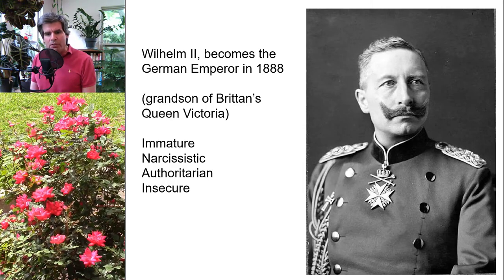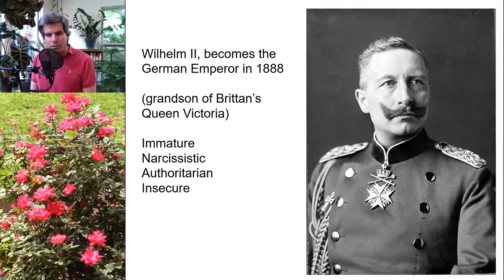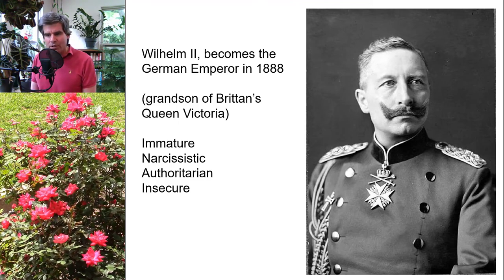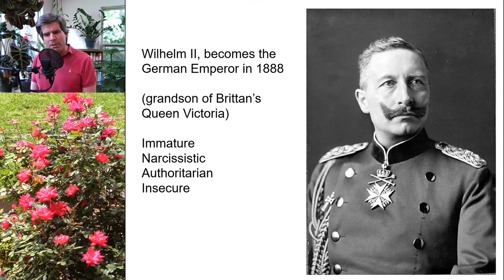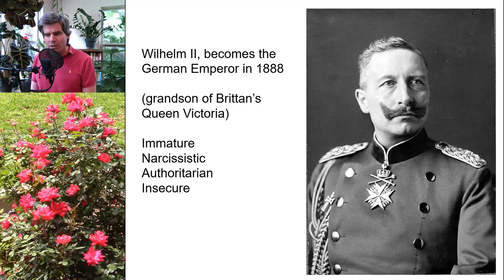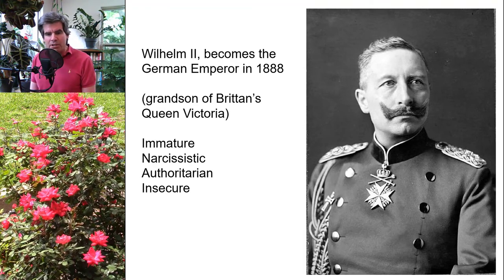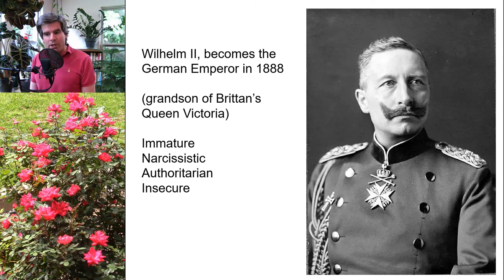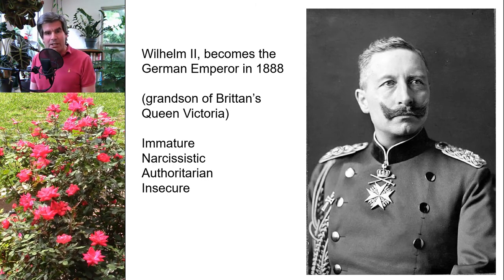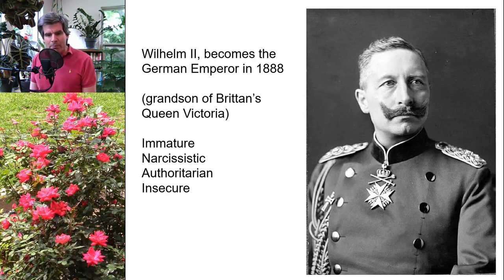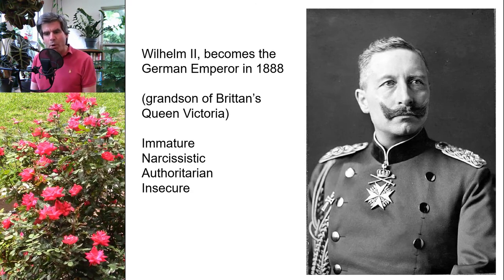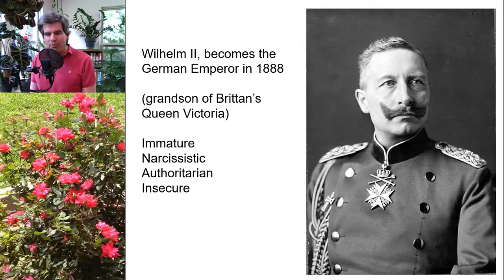Wilhelm II is often described as immature, narcissistic, authoritarian, and insecure. He hid a birth defect — his left arm was misshapen or short and of limited mobility. He almost always dressed in military uniforms, and during war games he wanted to play along — and his side always had to win. He was known for adolescent-like practical jokes: slapping people on the bottom, shaking hands overly hard with sharp rings, poking people in the ribs, pulling ears, and teasing people for physical oddities.